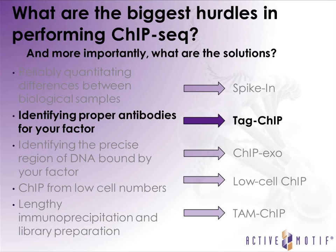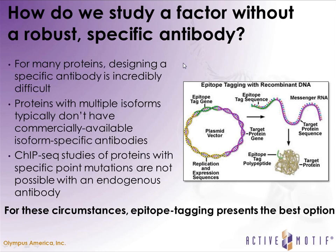The next hurdle is identification of proper antibodies for your factor. Active Motif does offer several ChIP-seq validated antibodies, but it's not always possible to find one for your factor of interest. You may be studying a protein with a known mutation you want to overexpress, or a specific protein isoform. In these cases, the best approach is to epitope tag your protein and study it after transient expression in the cell — you clone your gene into a plasmid vector, attach the epitope tag in frame, and an antibody against that tag can then be used for ChIP-seq experiments.